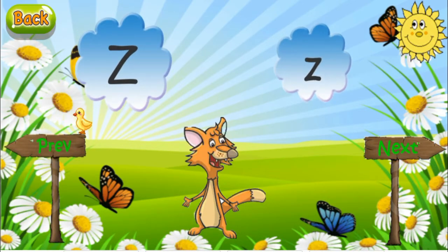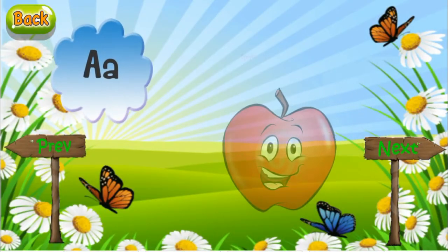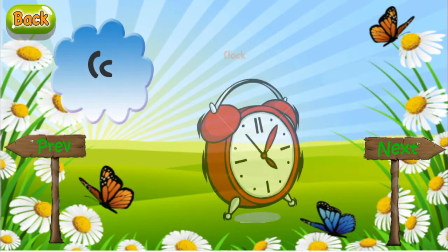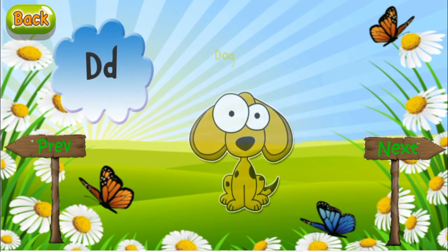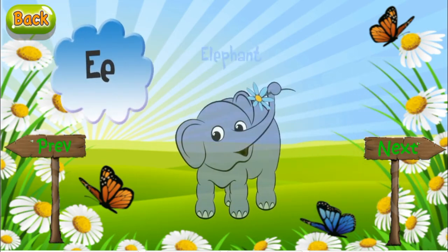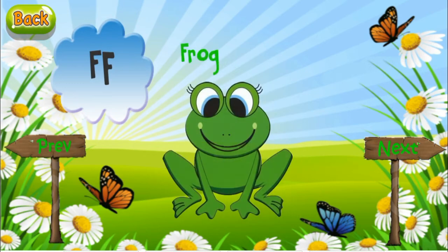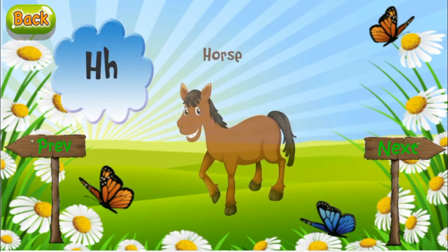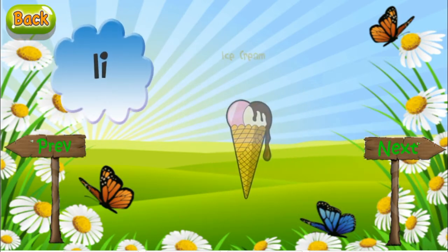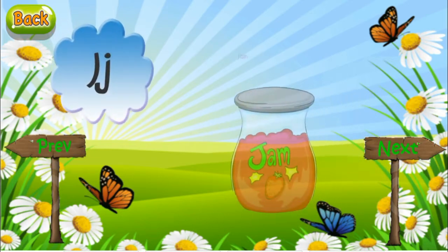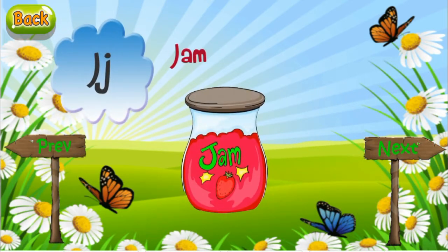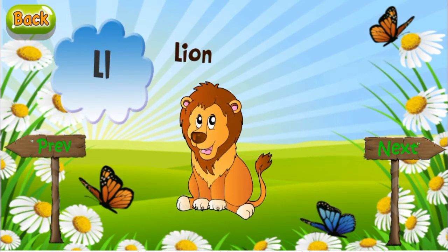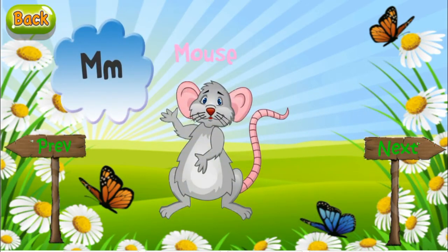A is for apple. B is for bird. C is for clock. D is for dog. E is for elephant. F is for frog. G is for grapes. H is for horse. I is for ice cream. J is for jam. K is for kite. L is for lion. M is for mouse.